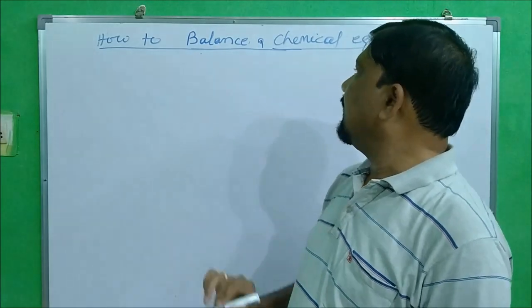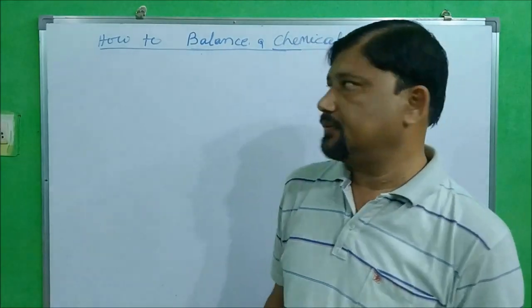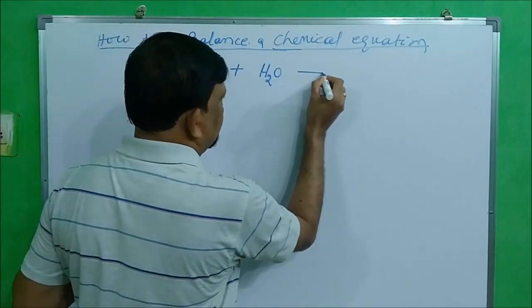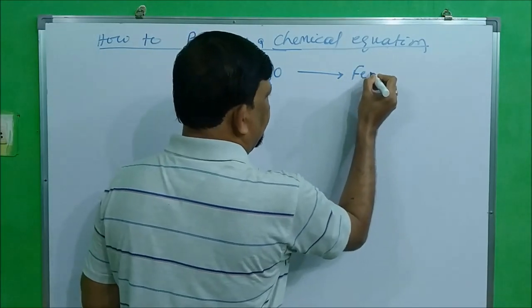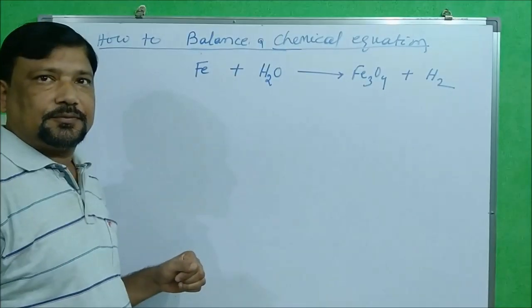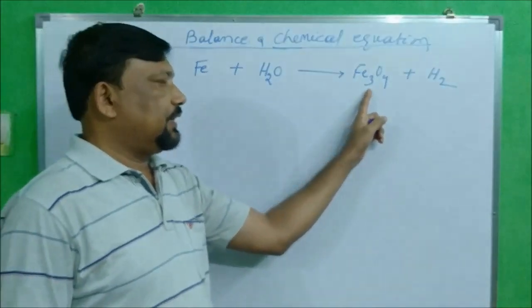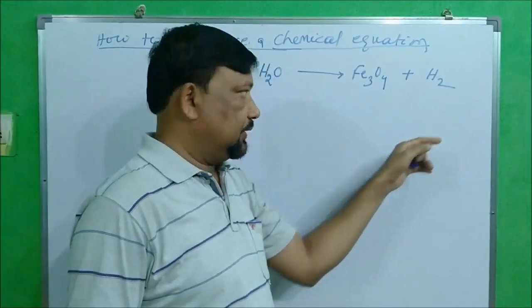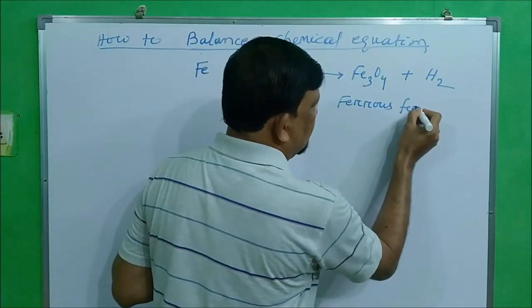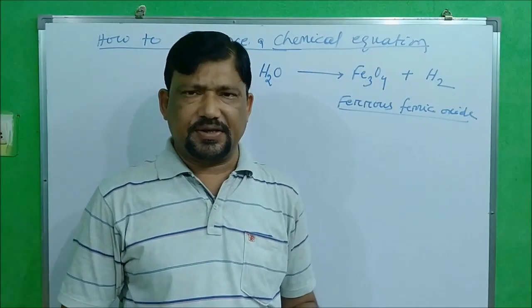The next topic is how to balance a chemical equation. Let's understand with an example: iron in the presence of steam gives Fe3O4 plus hydrogen. The iron symbol is Fe; it gives Fe3O4, which is a peculiar compound called ferrous ferric oxide, and hydrogen gas.